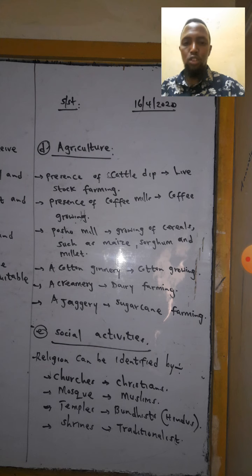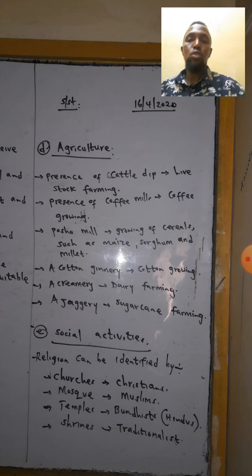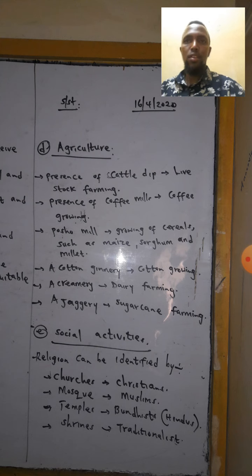Crops like maize, sorghum, and cotton indicate cotton growing areas. Cream dairy farming is also an economic activity that can be identified on a map.